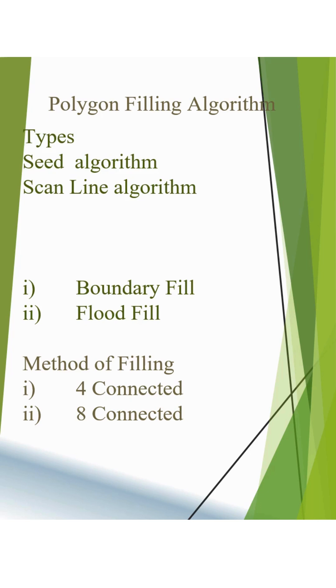Suppose we are taking a polygon. In boundary fill, the first condition is to take a pixel, or you can say this is a seed. It will check whether this seed has the same color as the boundary color.